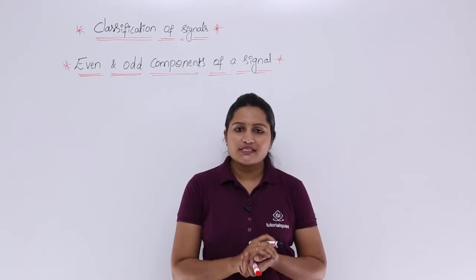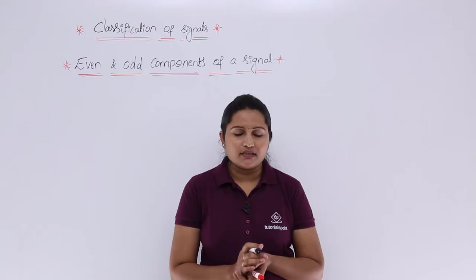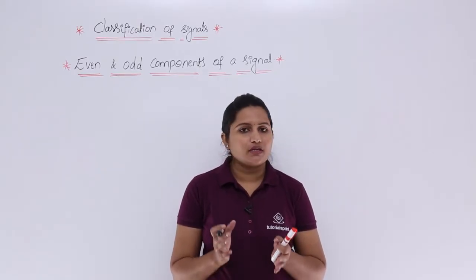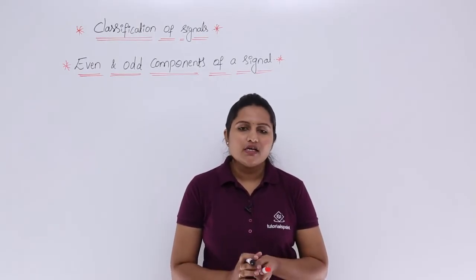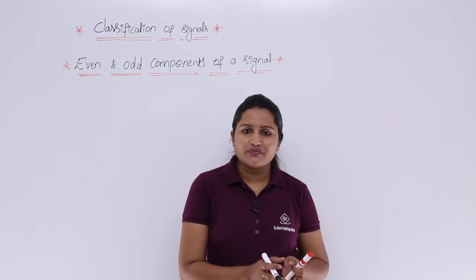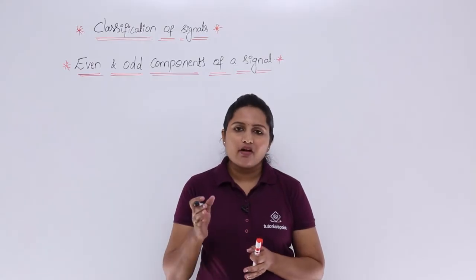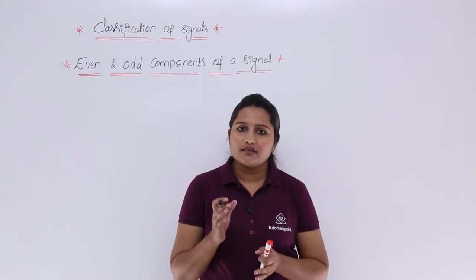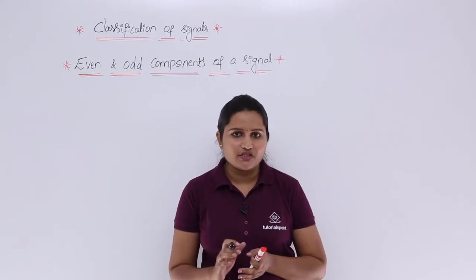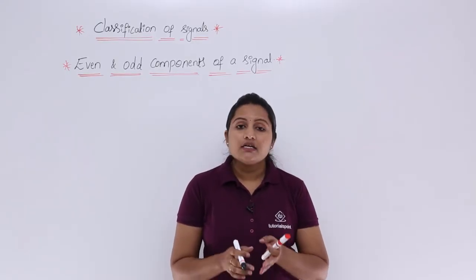In this video we are going to discuss about even and odd components of a signal. In the last video we discussed about even and odd signals. Even signals need to satisfy the condition x(t) = x(-t), and odd signals need to satisfy the condition x(t) = -x(-t). This thing we discussed in the last class.